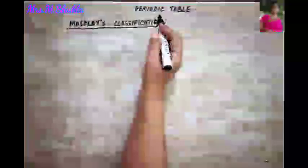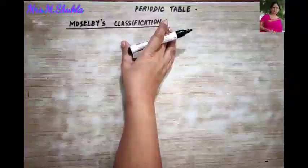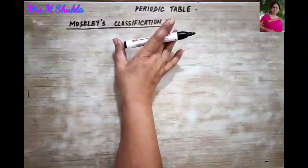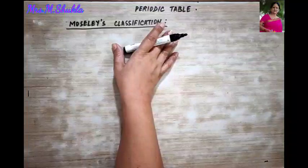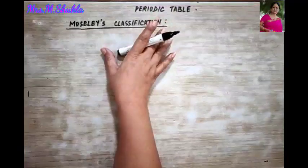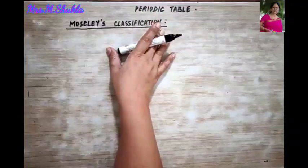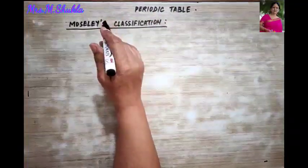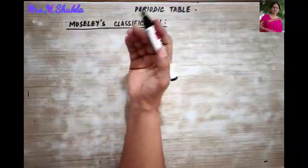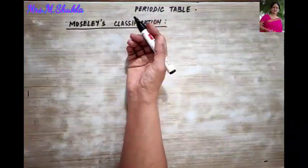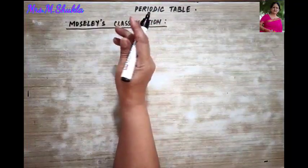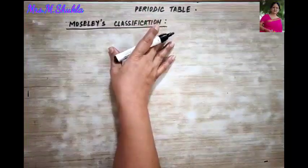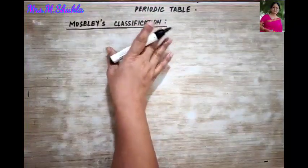Good morning children and welcome back to your chemistry class. In the last video we studied about Mendeleev's periodic table, the different defects found in his table, and why his table was rejected.